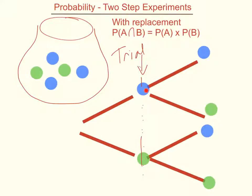If I get a blue the first time, then when I do my second trial and take another bead out, I've again got two possibilities: I can get a blue or a green. And that's the second trial. So you can see this tree diagram shows me all the things that could happen: I can get a blue and then another blue, a blue and then a green, a green and then a blue, or a green and a green.